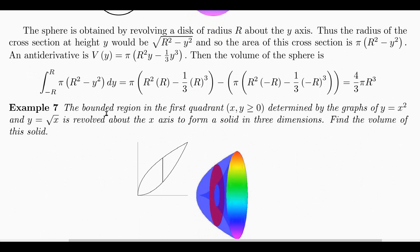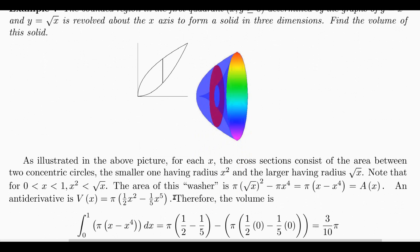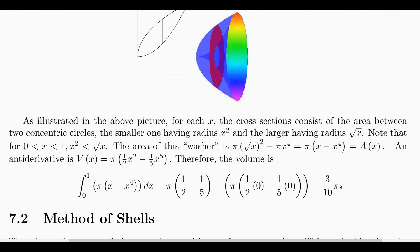Here's another example. Revolve the region between Y equal to square root of X and Y equal to X squared around the X axis. They intersect at the point (1,1). When you revolve this region, you get a disk with a hole punched out of it. The area of that cross-section is pi times (sqrt(X))² minus pi times (X²)². Integrating this and finding anti-derivatives gives 3 tenths pi. This is not a hard problem, but it's only reasonably easy because you have the methods of calculus.